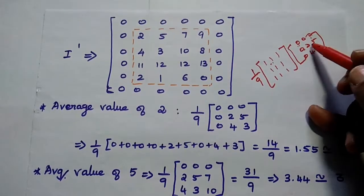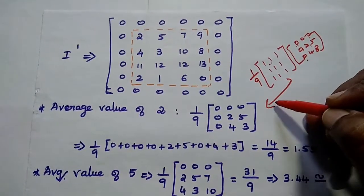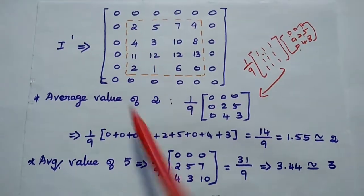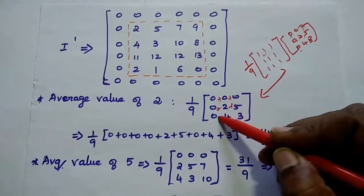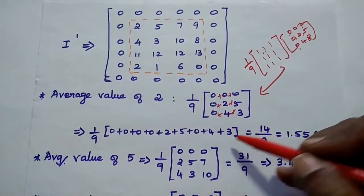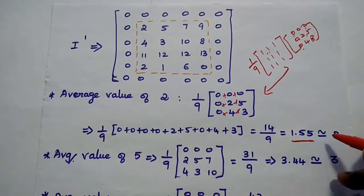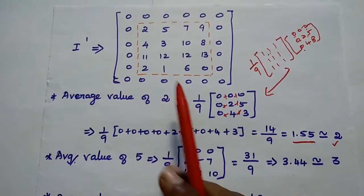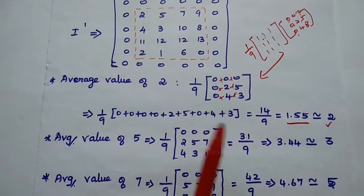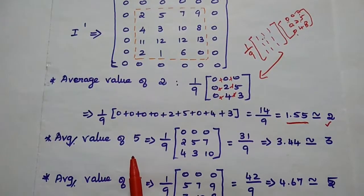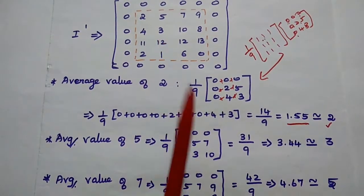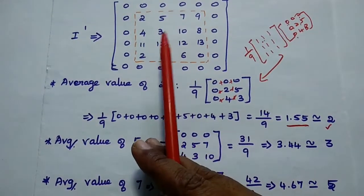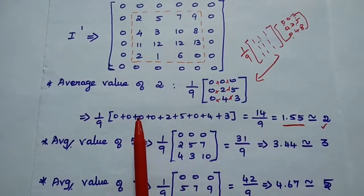We simply multiply each value by 1, so the average value of pixel 2 is 1/9 × (0, 0, 0, 0, 0, 2, 5, 0, 4, 3). Adding all values and dividing by 9 gives 1.55, approximately equal to 2. The average value of the first pixel 2 is 2 itself. The average value of the next pixel 5 is 1/9 × (0, 0, 0, 0, 2, 5, 7, 4, 3, 10), giving 3.44, approximately equal to 3.